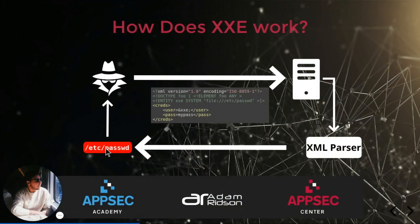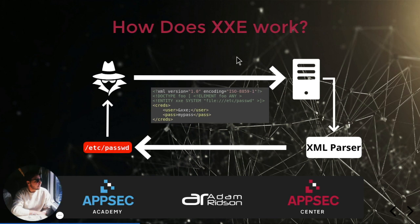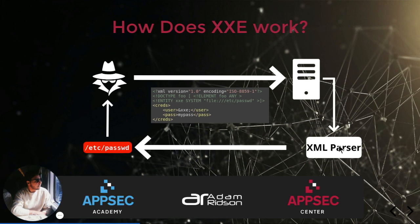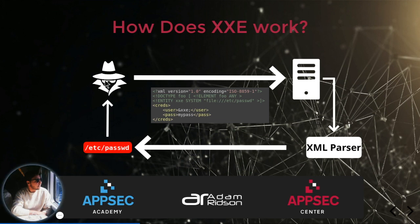Let's see how it works. As you can see on the screen, that's an attack scenario where a bad actor sends an XML input containing a reference to an external entity — in this case, the password file located in the /etc directory — which is being processed by an insecure XML parser, and will eventually leak the /etc/passwd file through the output to the attacker.